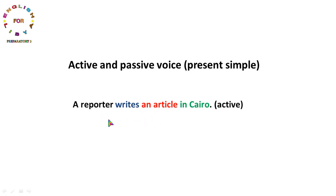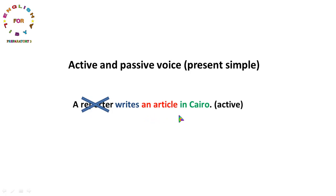لما نحول الجملة هذه إلى مبني للمجهول، هناك خطوات. أول خطوة هي أن نحذف الفاعل Subject. أحياناً يذكر الفاعل في نهاية الجملة مسبوقاً بكلمة by - تقريباً 20% من الجمل. الأغلبية 80% من الجمل عادة لا يذكر فيها الفاعل لعدم أهميته أو لأننا لا نعرف من هو الفاعل.